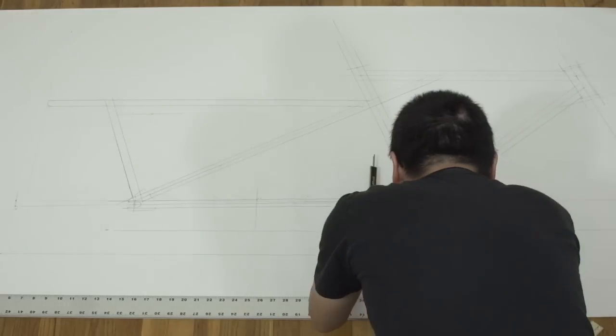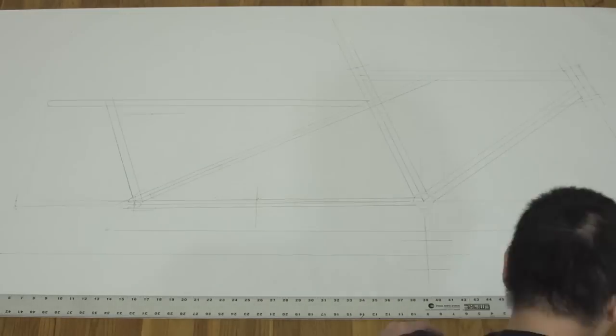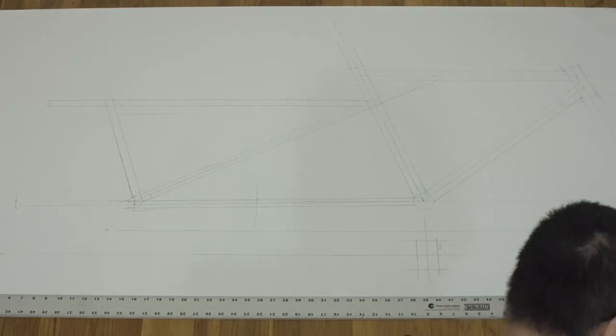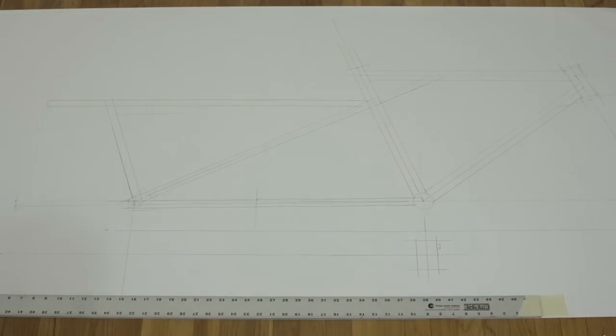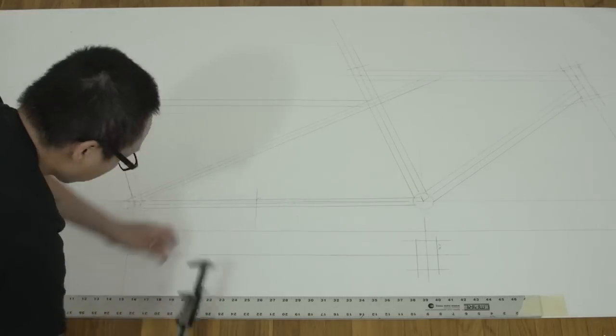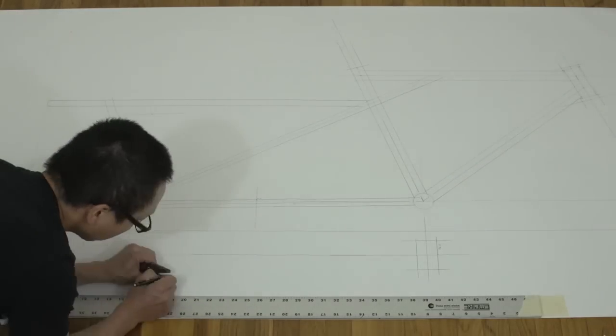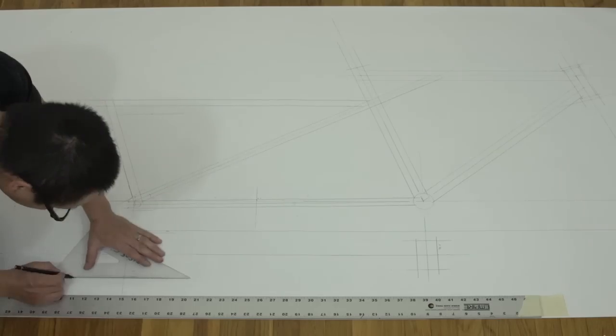And for the last part, I'm drawing a top-down view of the chainstays and wheel clearance. If you draw this right below the frame, you can use the side view of the frame to reference your measurements.